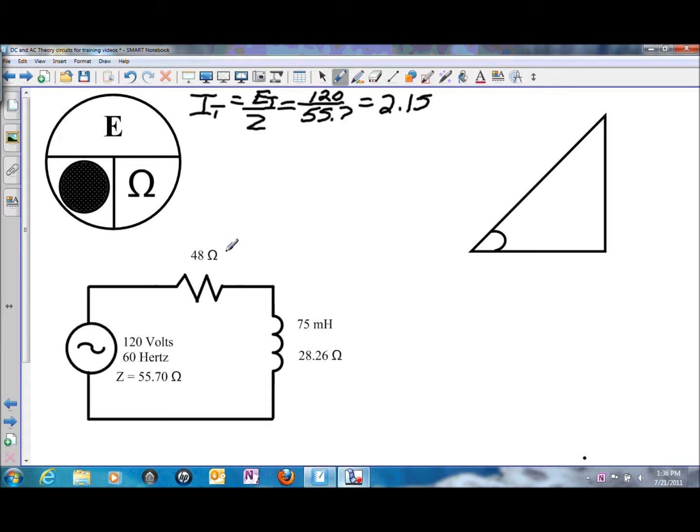Just like a DC circuit that is a series circuit, current flow is the same at all points. So we have 2.15 amps of current flow through the resistor and 2.15 amps of current flow through the inductor.